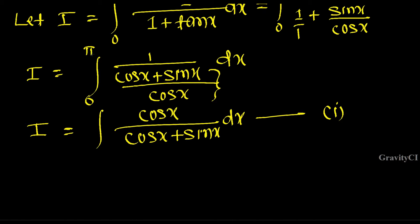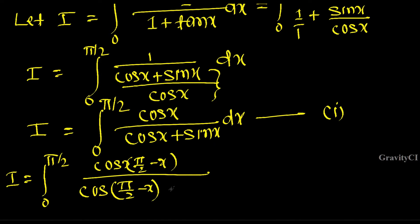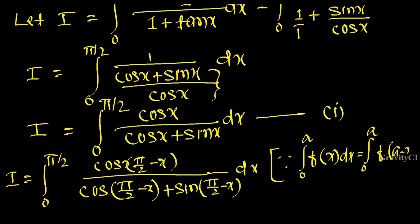The limit is 0 to pi by 2. We apply the property: integral from 0 to a of f(x) dx equals integral from 0 to a of f(a minus x) dx. So we substitute x with pi by 2 minus x, giving cos(pi by 2 minus x) upon cos(pi by 2 minus x) plus sin(pi by 2 minus x).